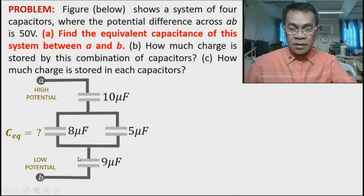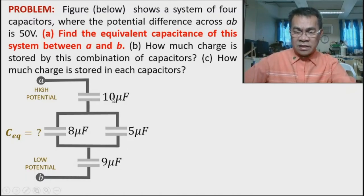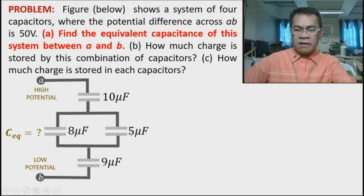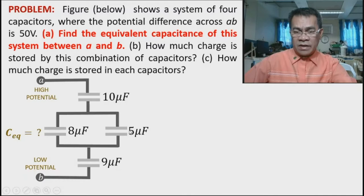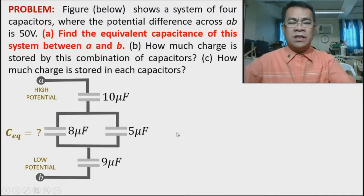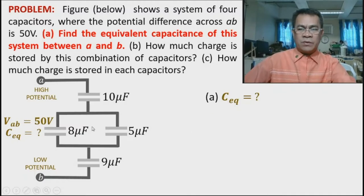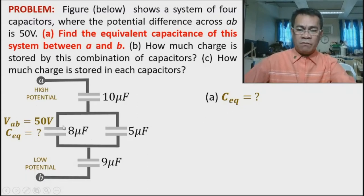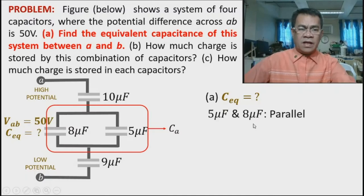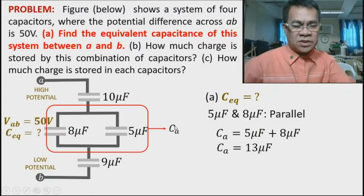Combine the innermost parallel capacitors: 5 µF + 8 µF = 13 µF. Call this C_A = 13 µF. We do not need the 50 volts yet. After combining, the diagram is now reduced: 10 µF is in series with C_A (13 µF), which is in series with 9 µF. This is now a simple series connection, and we can proceed to find C_equivalent.